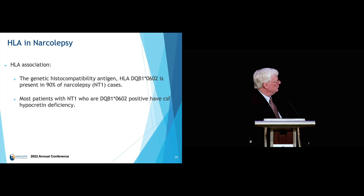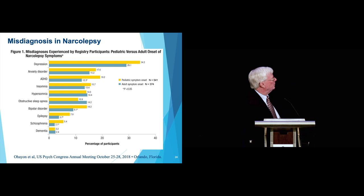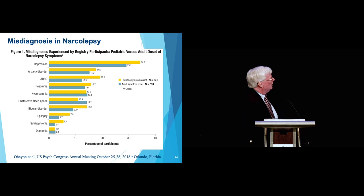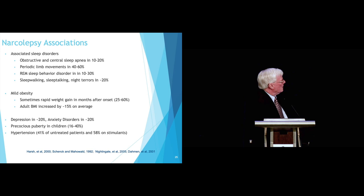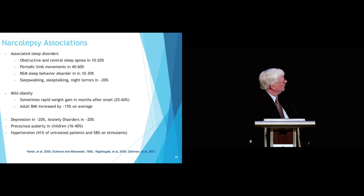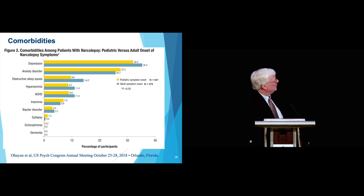Narcolepsy is often misdiagnosed because of other conditions — depressive disorders and anxiety disorders are very common. Other conditions that can occur include central and obstructive sleep apnea, REM sleep behavior disorder, sleepwalking, sleep talking, increased body weight particularly in children, precocious puberty in children, and cardiovascular disorders including hypertension. These are the comorbidities that can occur in association with narcolepsy.